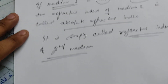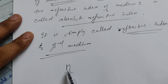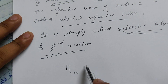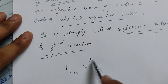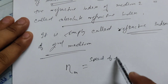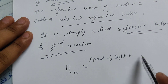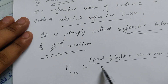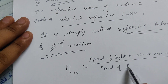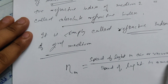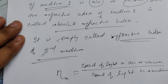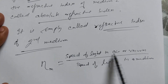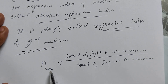Clear? So the absolute refractive index of any medium: refractive index of medium equals speed of light in air and vacuum divided by speed of light in that medium. It is the same formula as before — just the first medium is replaced by air or vacuum. This is represented simply as the refractive index of the medium. Clear?